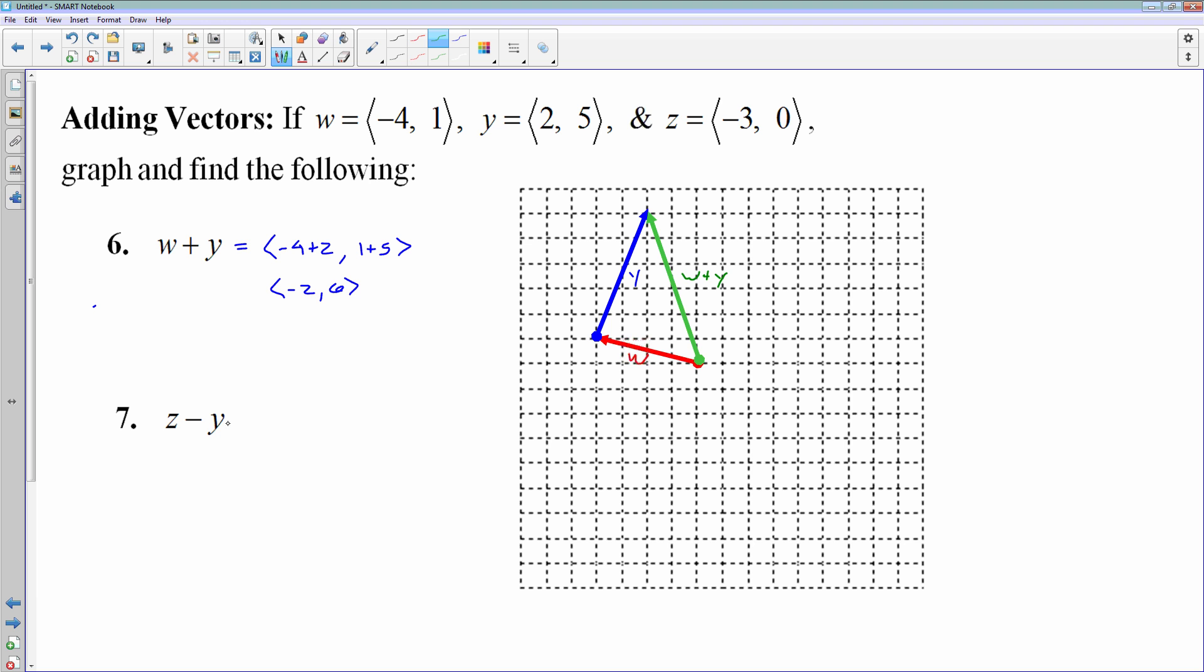Now z minus y, if you subtract them, that's a little bit different. It is algebraically as simple as subtracting the components. So z minus y, z is negative 3. I'm going to subtract the components of y, so negative 3 minus 2, and 0 minus 5. And you end up with the vector negative 5, negative 5.